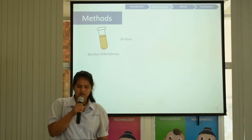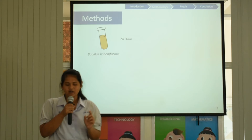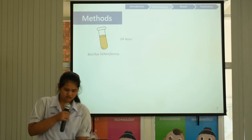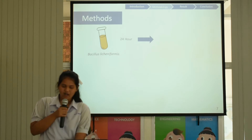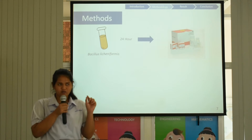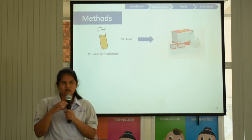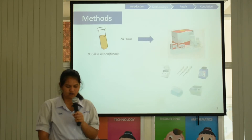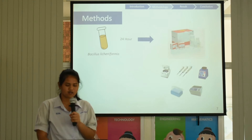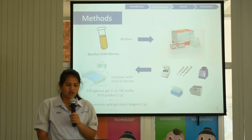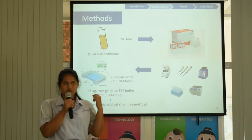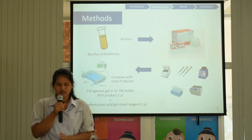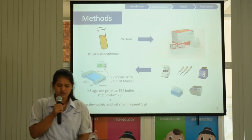We start by cultivating bacteria in nutrient broth for 24 hours. After that, I bring two extracts of genome by genomic DNA miniprep. I use a red dot indicator in this slide, and I follow the results using gel electrophoresis technique compared with a DNA marker.